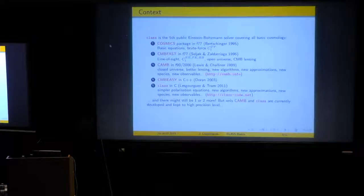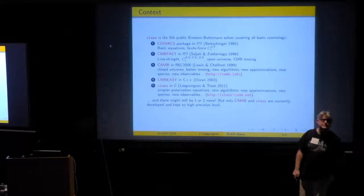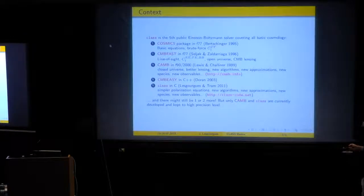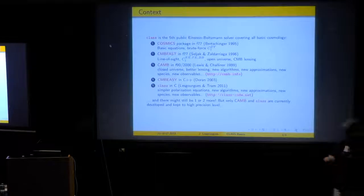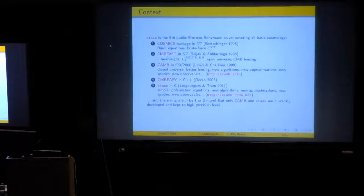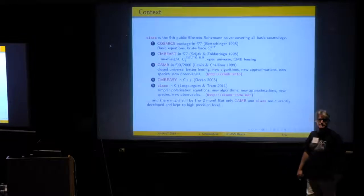So CLASS is of course not the first public Einstein-Boltzmann code. Let's start from a short historical review. So all this business started when Bertschinger in 1995 and Cheng-Pei Ma, and also somebody else who was helping, implemented the most important equations for CMB physics in a package in Fortran called COSMICS. And this was really a brute force approach, it was very heavy, it was taking hours. There was a big breakthrough very soon after, just one year after, when Seljak and Zaldarriaga came up with a line of sight method.